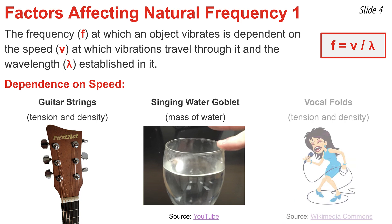As a final illustration of speed, consider your vocal folds or vocal cords. When you tighten those vocal cords, the speed of vibrations within them increases and you produce higher-frequency sounds. On the other hand, if you relax them and reduce tension — just like the guitar string — the speed of vibrations decreases, frequencies become lower, and so do the pitches.